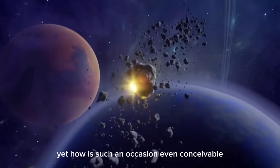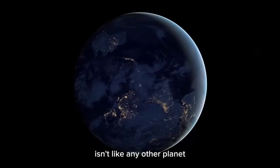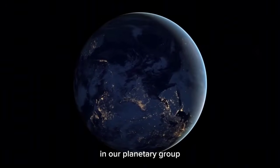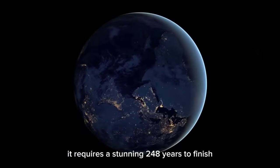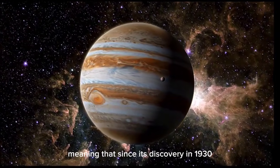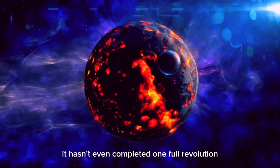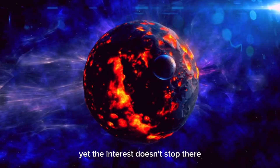Yet how is such an event even conceivable? Pluto's journey around the Sun isn't like any other planet in our planetary group. It requires a stunning 248 years to complete a single orbit, meaning that since its discovery in 1930, it hasn't even completed one full revolution.